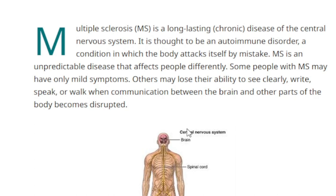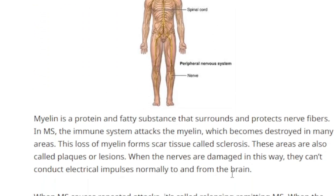Some people with MS may have mild symptoms; others may lose their ability to see clearly, write, speak, or walk. When communication between the brain and other parts of the body becomes disrupted, myelin — a protein and fatty substance that surrounds and protects nerve fibers — in multiple sclerosis, the immune system attacks the myelin, which becomes destroyed in many areas.